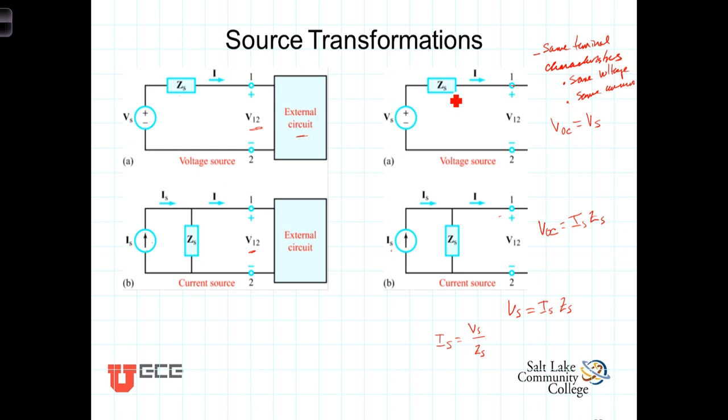We can get a little bit better feel for that by looking at what is referred to as the short circuit current. If you short this out here and call it I short circuit, we should expect to experience the same I short circuit, the same current through this short here. Well, in this circuit here, I short circuit, in other words, zero resistance there, the current there is just going to be V sub S divided by Z sub S.